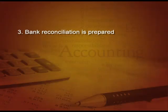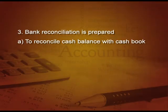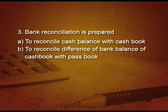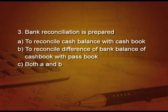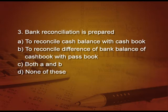Third MCQ: Bank reconciliation is prepared — A: to reconcile the cash balance with the cash book; B: to reconcile the difference of bank balance of cash book with the pass book; C: both A and B; D: none of these. The right option is B — to reconcile the difference of bank balance of cash book with the pass book.